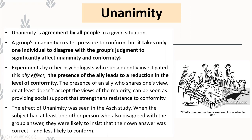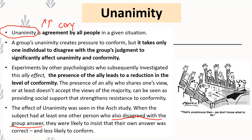Unanimity is essentially agreement by all people. In Asch's study, unanimity was a big factor in influencing whether the subject would agree with the group's answer. If at least one other subject disagreed — saying the answer is actually wrong — the subject was more likely to feel comfortable giving their own response. A lack of unanimity leads to less conformity, but the presence of unanimity leads to more conformity. When everyone is doing something unanimously, it's hard to break the mould and stick out by doing something different.